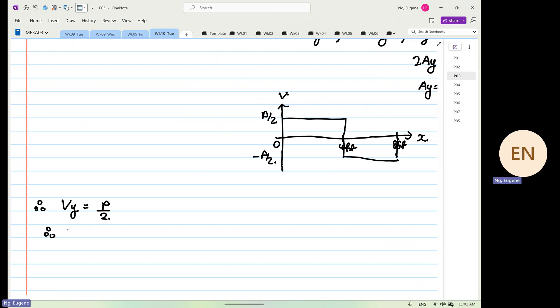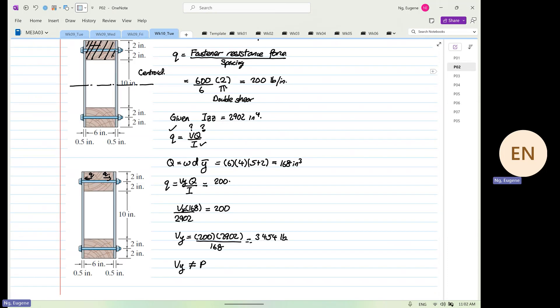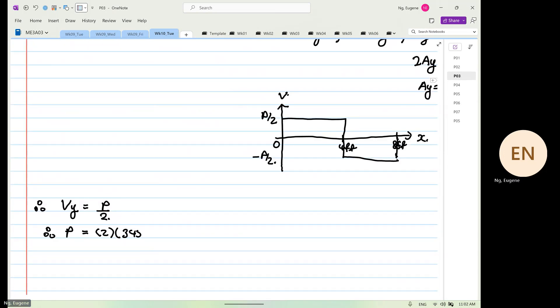So therefore, P is equal to twice our Vy that we calculated earlier, which is 3454.6. So this will be equal to 2 times 3454.69.08. So this force, the maximum the fastener could take is 6902.